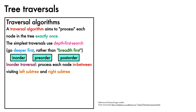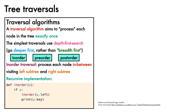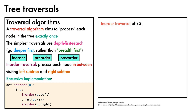The in-order traversal works by processing each node in between visiting its left subtree and its right subtree. It's an algorithm that is simplest to implement recursively, which we can do in Python as follows. We define a function that takes in a node u. If the node is not none, we recurse into its left subtree. We then process the node in some way — here, we are choosing to print its key. Then finally, we recurse into the right node. Let's see how this looks in practice, by performing an in-order traversal of a binary search tree, using the same example as before.